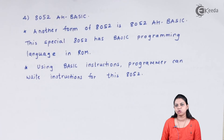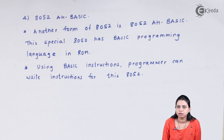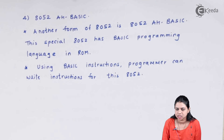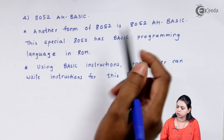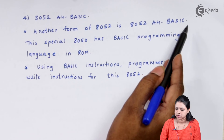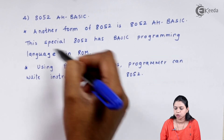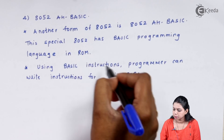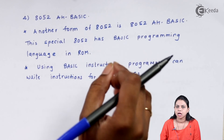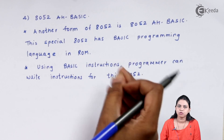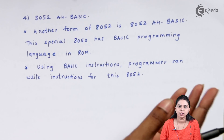Next is 8052 AH Basic. This is another form of 8052, and the difference is that here we use the BASIC programming language to write a program. This special 8052 has the BASIC programming language stored in ROM, so using BASIC instructions a programmer can write programs for this microcontroller.